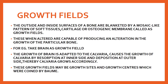The second mechanism is growth fields. The outside and inside surfaces of a bone are blanketed by a mosaic-like pattern of soft tissue, cartilage, or osteogenic membrane — this is called a growth field. Your bone is surrounded by various structures such as soft tissues and cartilage, all known as growth fields. When altered, they are capable of producing an alteration in the growth of that particular bone.